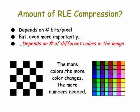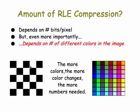To sum up, what does the amount of RLE compression depend on? It depends on the number of bits per pixel, but even more importantly it depends on the number of different colors in the image. Look at these two images — regardless of how many bits we use, neither one is going to lead to much compression. In a checkerboard pattern we would have one black, followed by one white, followed by one black, and so on. In an image where the color changes in every pixel, we're going to have no compression at all. In fact, the file is going to get a lot bigger, as we saw in the first example.